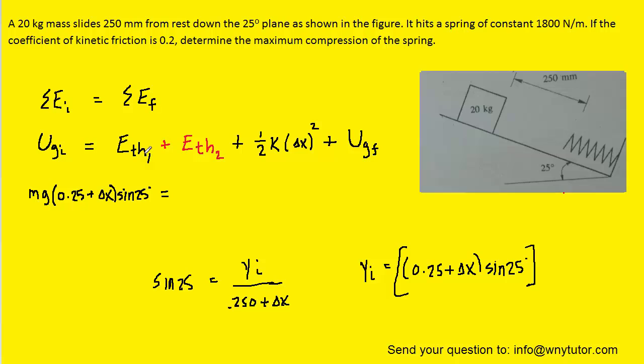Now on to the first thermal energy. We know that thermal energy is equal to the kinetic frictional force multiplied by a distance. In turn, the kinetic frictional force is equal to the coefficient of kinetic friction times the normal force.